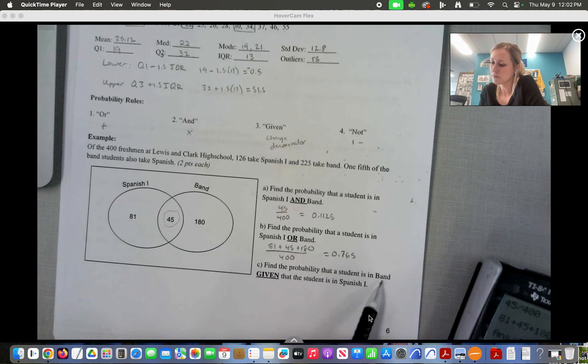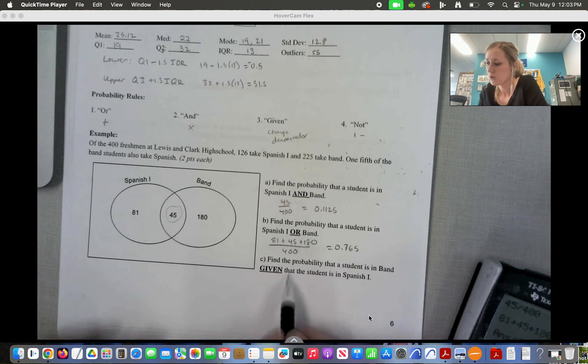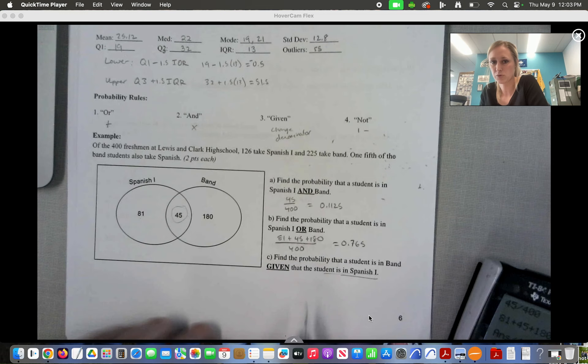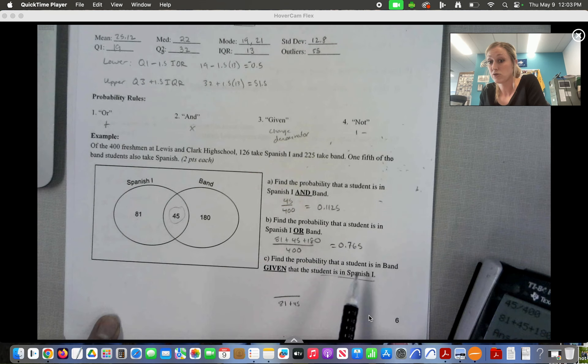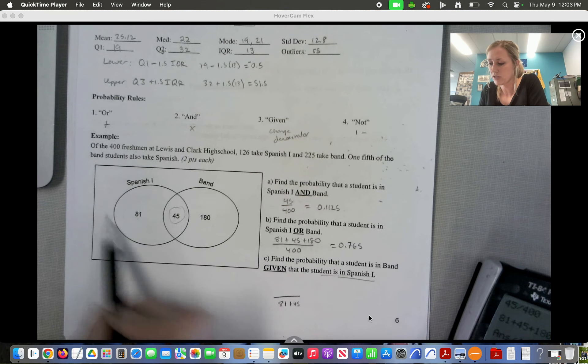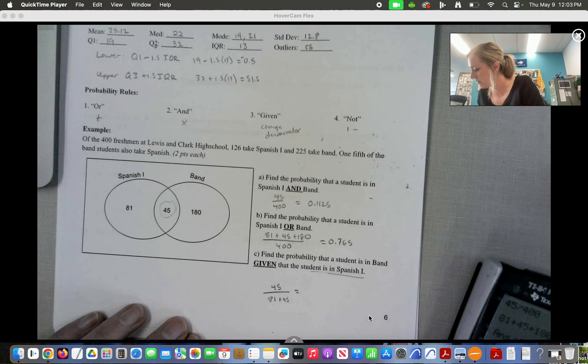Find the probability that a student is in Band given the students in Spanish 1. So instead of out of 400 like these previous two were, we only are going to have the total of the Spanish 1 kids. So the Spanish 1 total is 81 plus 45, right? These are all the kids in Spanish 1. That's my new total. Find the probability that a student is in Band. So of these Spanish 1 kids, only 45 of them are in Band. So this is how we're going to calculate that. 45 divided by 81 plus 45. And we get 0.357.